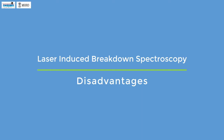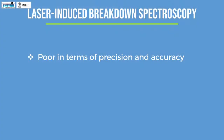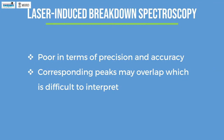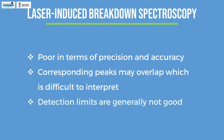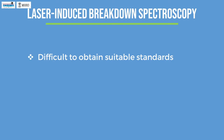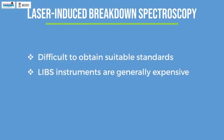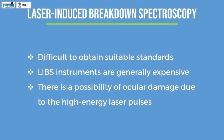Disadvantages of LIBS: LIBS analysis is poor in terms of precision and accuracy. A typical LIBS spectrum will have several peaks if the sample contains several elements, and the corresponding peaks may overlap, which is difficult to interpret easily. Detection limits are generally not as good as compared to ICP-AES techniques. Sometimes it is difficult to obtain suitable standards, which are required for quantitative analysis. LIBS instruments are generally expensive, especially due to the laser source, though portable LIBS instruments are relatively cheaper. Over time, there is a possibility of ocular damage due to the high energy laser pulses.